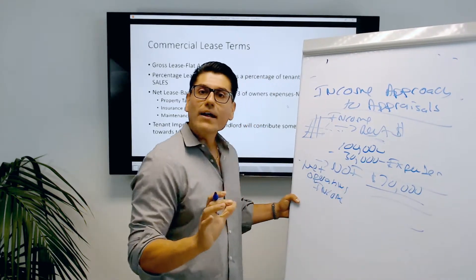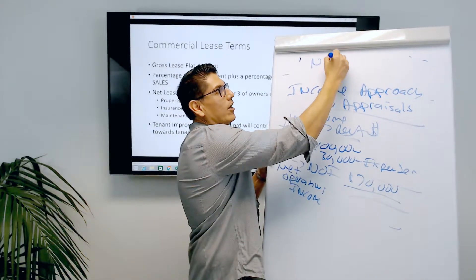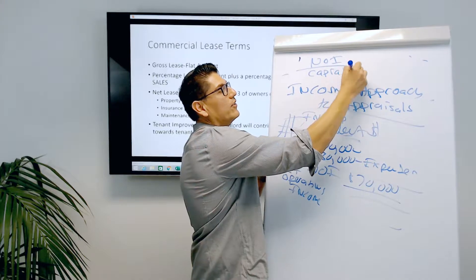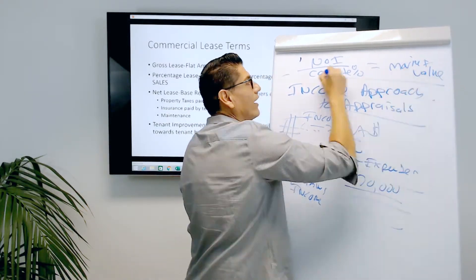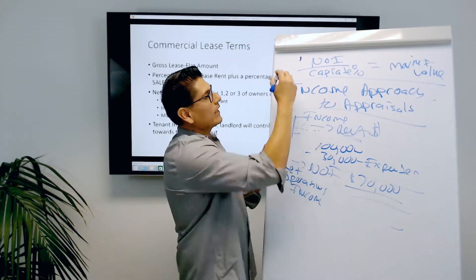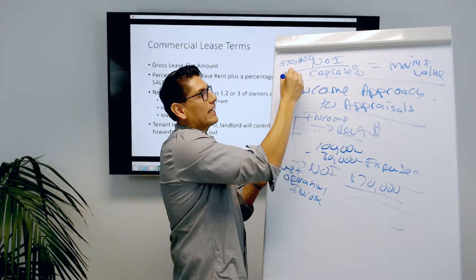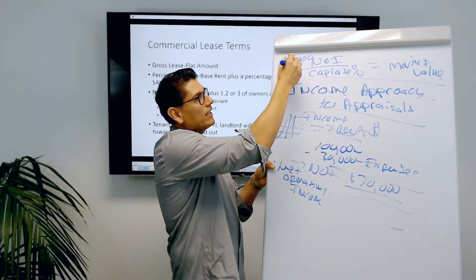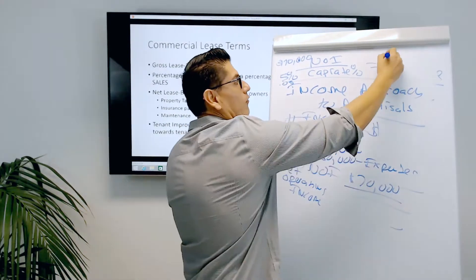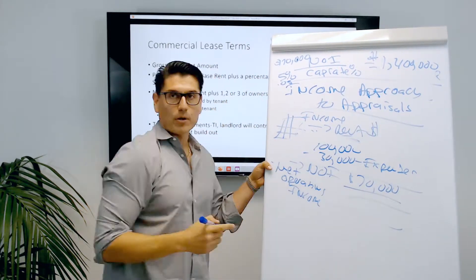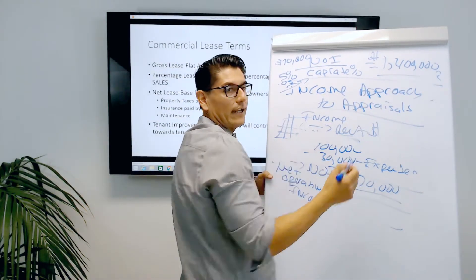There's no math on the state exam, but we need to know where things fit. You take the net operating income, divide it by a desired rate of return — which is all a cap rate is — to get market value. So if the NOI is $70,000 and we want a 5% cap rate, we divide $70,000 by 0.05, giving a market value of $1.4 million. The appraiser divides NOI by the desired rate of return to get market value.